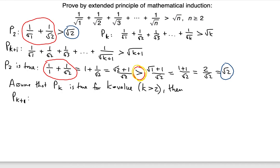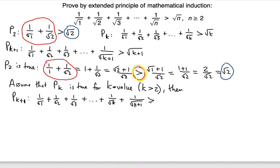From the assumption that P(k) is true, we build the P(k+1) statement by including the extra last term. So we write: 1/√1 + 1/√2 + 1/√3 + ... + 1/√k + 1/√(k+1), and that should be greater than √(k+1). We now compare this P(k+1) statement with the P(k) statement.